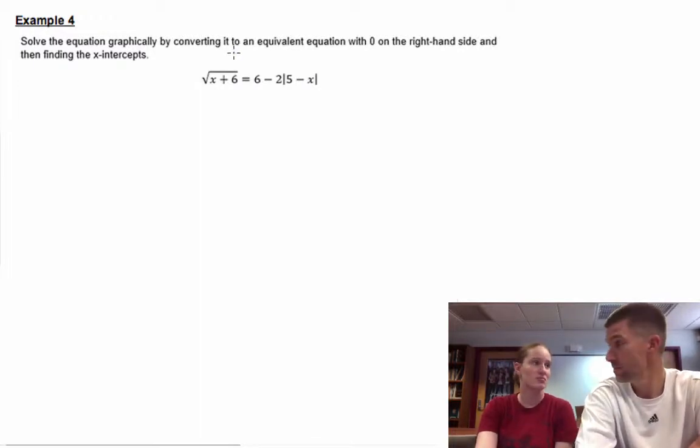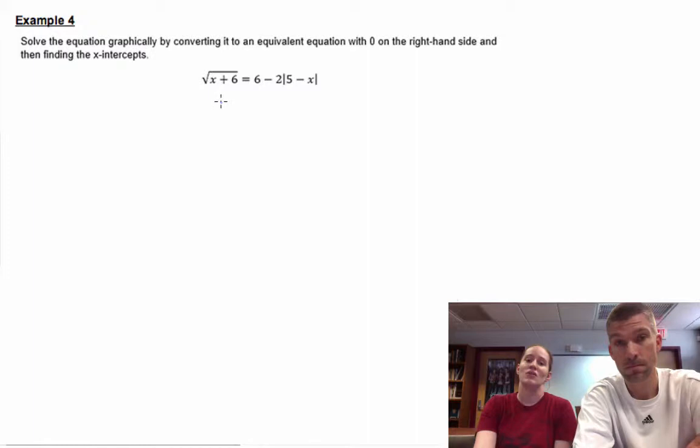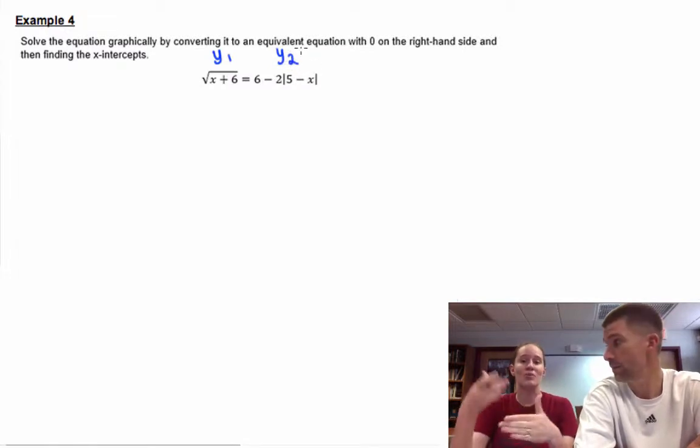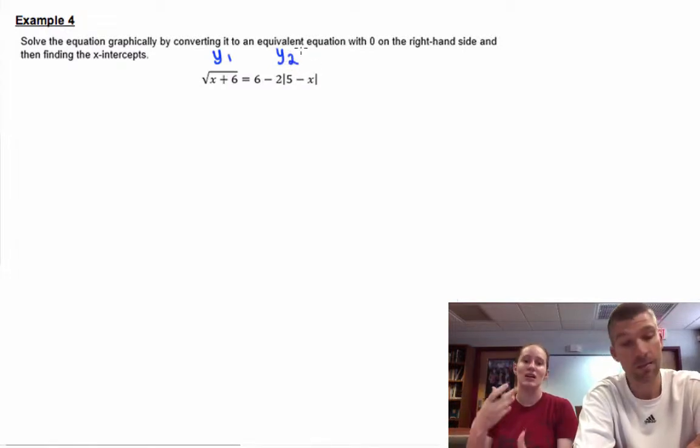So they tell you in the book to get everything on one side, then put it into Y1 and find the x-intercepts. That's a great way of doing it and can actually be easier. The other way is to put the left side in as Y1, the right side as Y2, and find where they intersect. Sometimes finding where they intersect is rough—that can be really difficult.